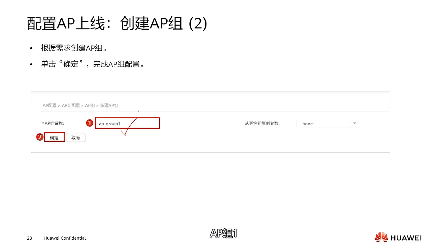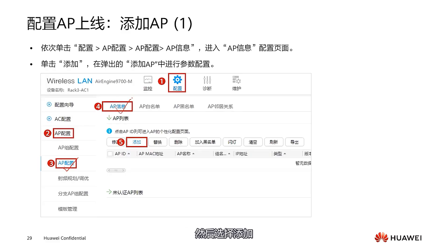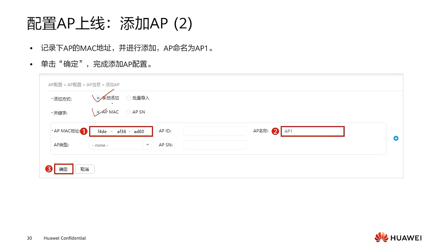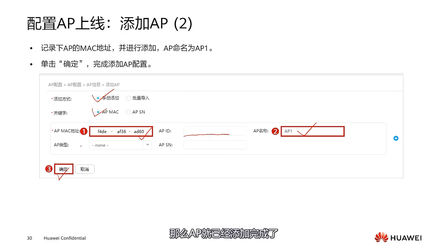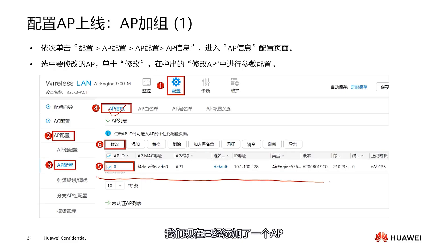Now we start dealing with AP configuration. In AP configuration, the first thing to do is set up an AP group. Select AP group, then select New to create a new AP group. We set the name as AP group 1, then click OK. After setting up the AP group, we need to add individual APs. In AP configuration, select AP information, then select Add. We will add manually using the AP's MAC address to identify legitimate APs. Input the MAC address, set an AP name, and optionally set an AP ID or let the system assign one automatically. Click OK and the AP has been added successfully.